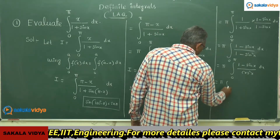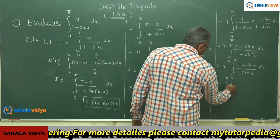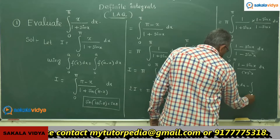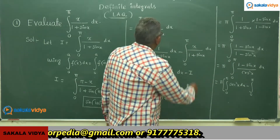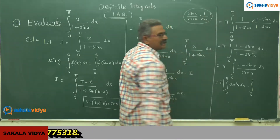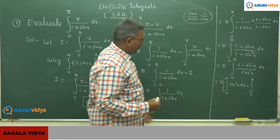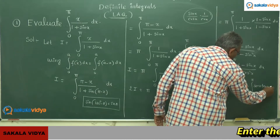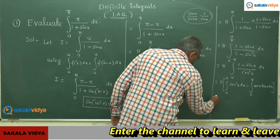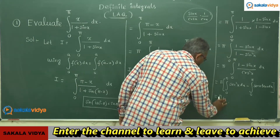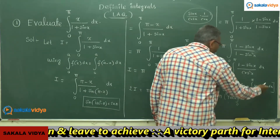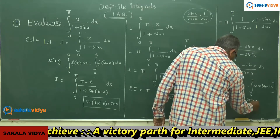We can separate this into two integrals: π times the integral from 0 to π of 1/cos²x dx, minus the integral from 0 to π of sin x/cos²x dx. Now 1/cos²x is sec²x, and sin x/cos²x equals (sin x/cos x) × (1/cos x) = tan x · sec x, which is sec x tan x. So 2I equals π times [integral of sec²x dx − integral of sec x tan x dx]. Integrating: integral of sec²x is tan x, and integral of sec x tan x is sec x, evaluated from 0 to π.